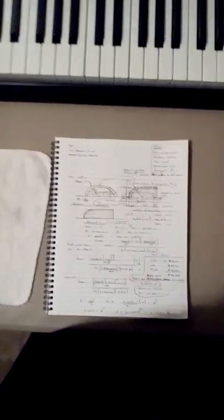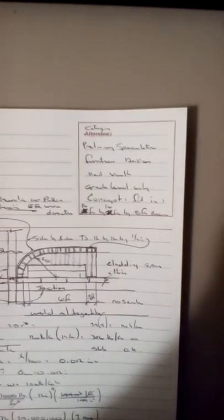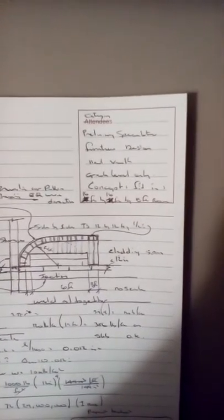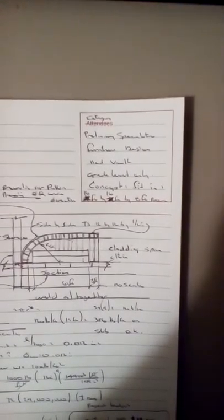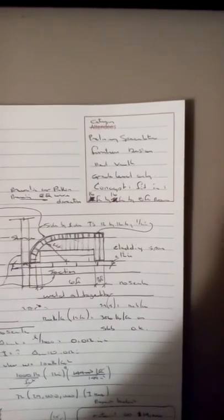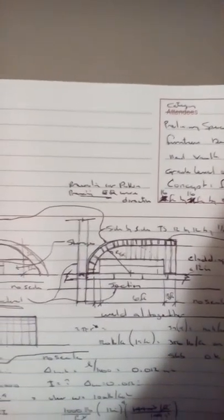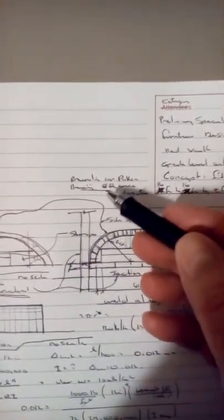Welcome once again to architectural engineering students. What we have here is a puny speculative furniture design. This is a bed vault for grade level only, it's a concept that fits in a 16 foot by 16 foot by 8 foot room. What's shown here is a prevailing air pattern.